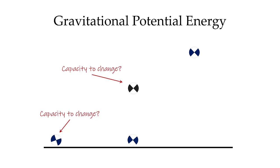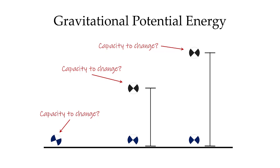If we raise an object even higher, it's going to have a greater capacity to change. All we have to do is release it and we'll see the object return back to Earth — and the higher it is off the ground, the more potential it has to make that change. So the height off the ground is an important consideration when talking about potential energy. The higher something is off the ground, the greater the capacity to change, and therefore the greater the gravitational potential energy.